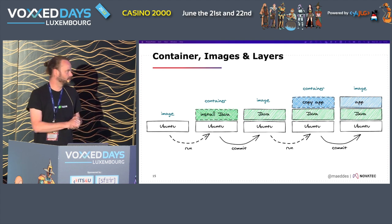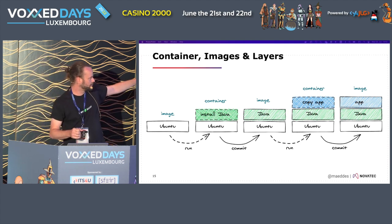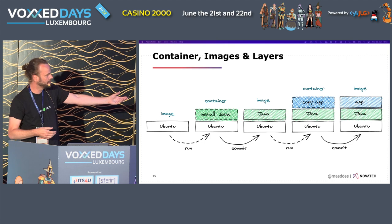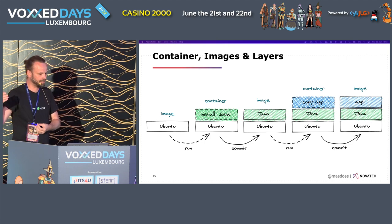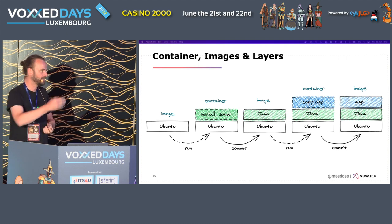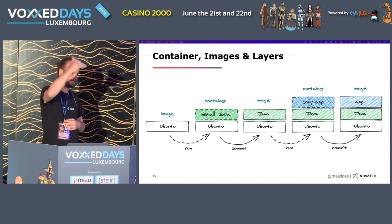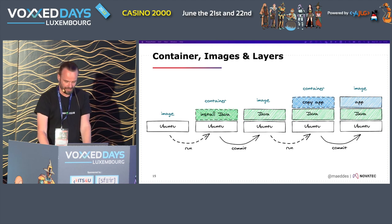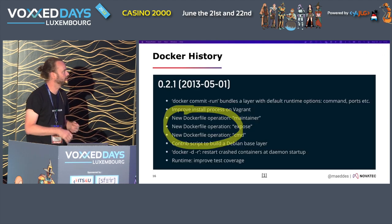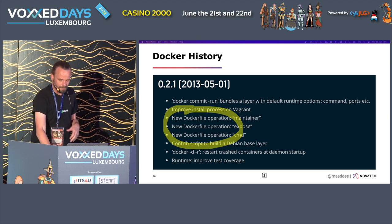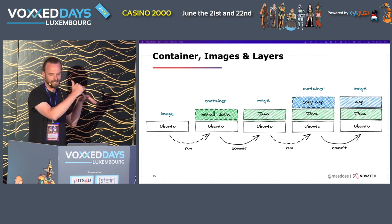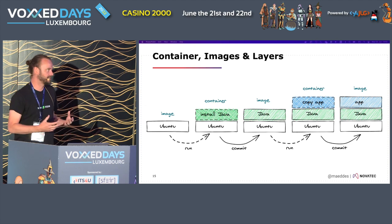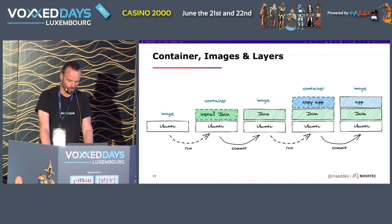In the very beginning, to construct those layers, you would basically start and run an image, then work in that container - for example, installing a Java runtime - then do a commit, which snapshots the container into an image format, and then run it again, stacking one layer over the next. This was how it worked briefly in the beginning, but Docker realized this wasn't the most elegant way. Nevertheless, it's important to understand this layer structure, because that's one of the points where you can make improvements to build your image more efficiently.